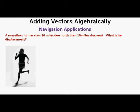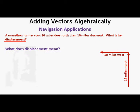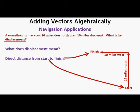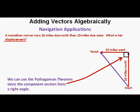Next problem: a marathon runner runs 16 miles due north, then 10 miles due west. What is her displacement? A sketch of the situation is helpful if not absolutely necessary. Here the two component vectors are drawn — one going 16 miles north and the other going 10 miles to the west, at right angles to the first vector. The word displacement in this context means the direct distance from start to finish, sometimes called 'as the crow flies,' and can be represented by a vector — the purple arrow from start to finish.